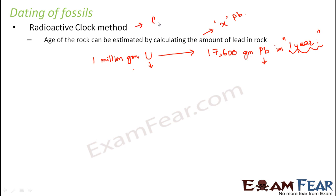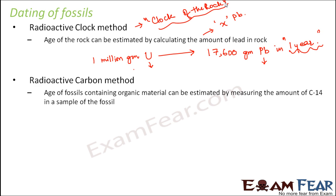This method is also known as the radioactive clock, or alternatively the clock of the rock. It tells the time of the rock — how many years ago this rock existed. This is our first method.